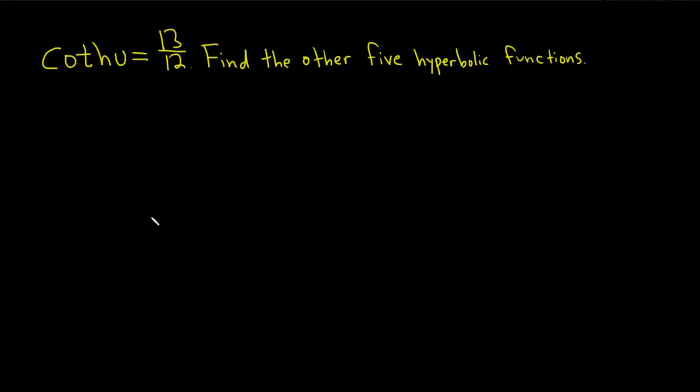Hi, everyone. In this problem, we're told that the hyperbolic cotangent of u is equal to 13 over 12, and we're being asked to find the other five hyperbolic functions. So let's do this problem using a minimal amount of information. I'll assume that we know this identity here: cosh squared u minus sinh squared u is equal to 1. Now there's other identities, and there's another one we're going to use. But let's use this identity, which you might know already, in order to come up with one that we can use to figure out this problem.